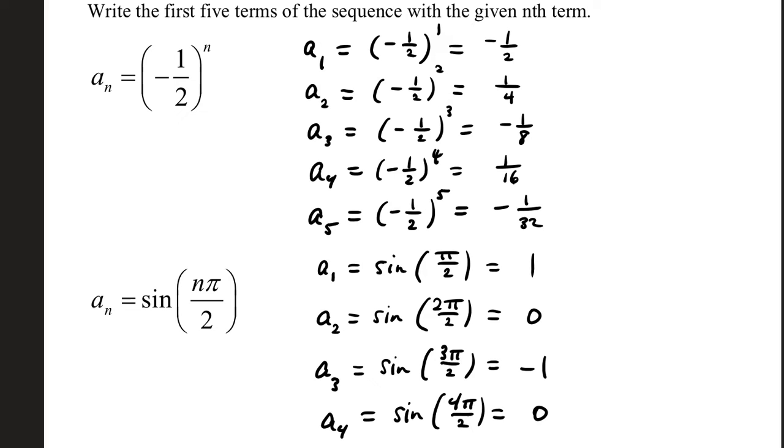Over here, you're going to have what's called an nth term, and it will receive any value of n from the counting numbers that you want to plug in. a sub 1 is when you replace n with 1. Negative 1 half to the first power is negative half. a sub 2, you replace the power with 2. Negative 1 half squared is positive 1 fourth, and you proceed down the line. All you're doing is increasing the n by 1. The subscript and n will match.